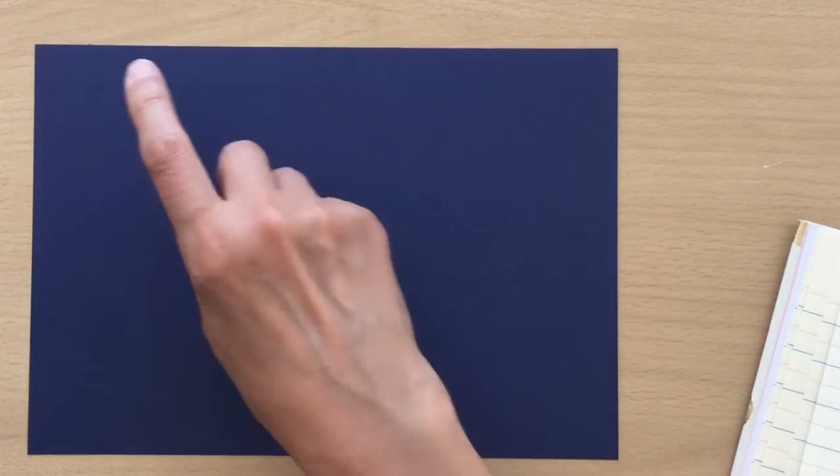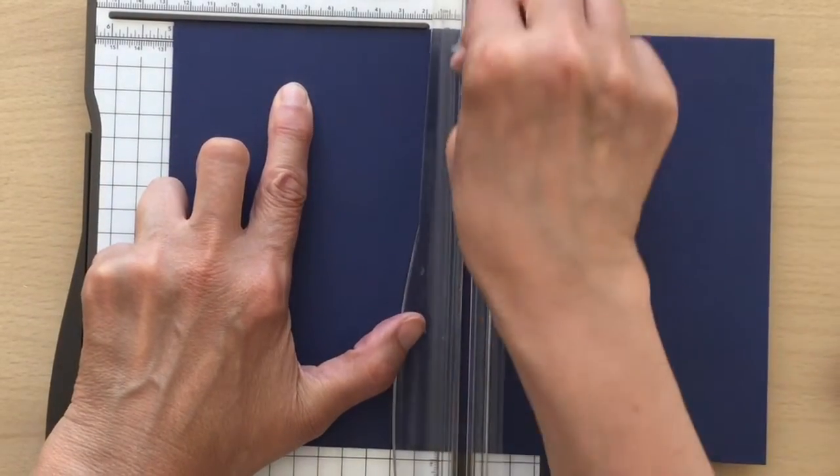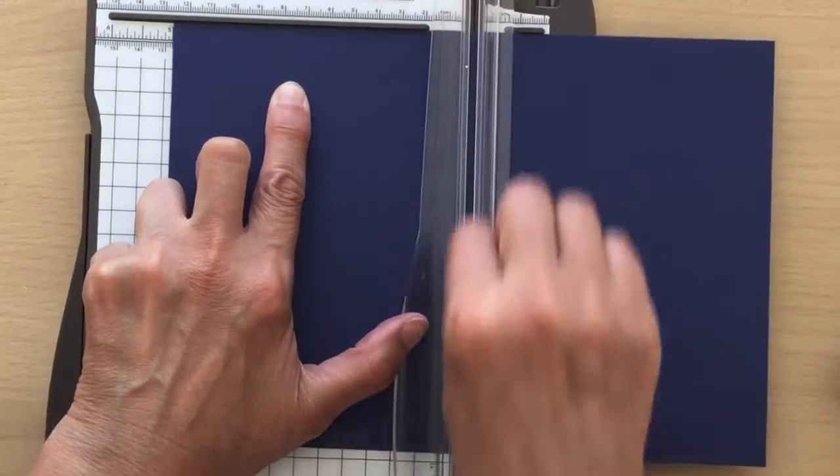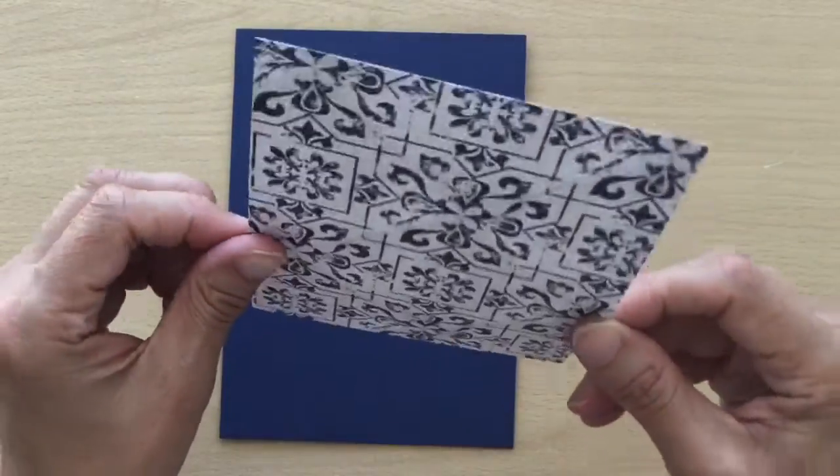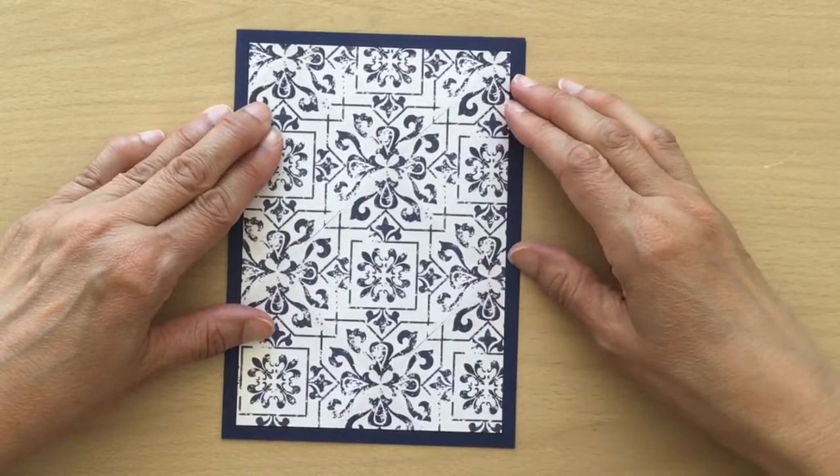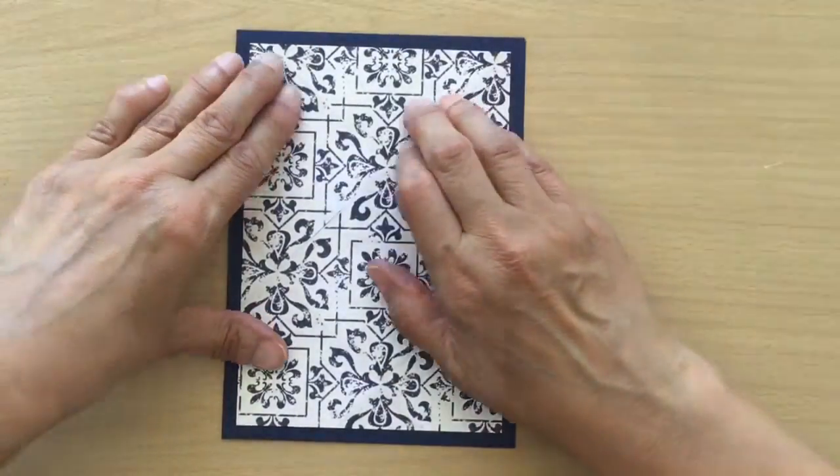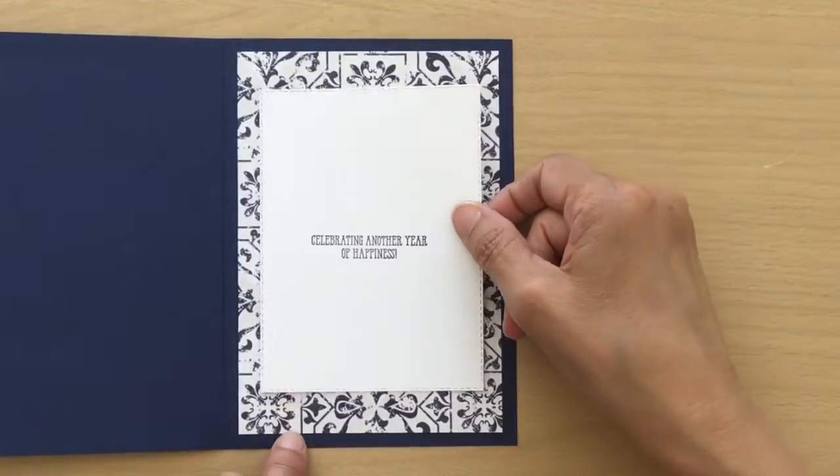My card base, as I said, is Night of Navy and it's going to be a five by seven card, so it's 10 inches by seven inches or 25 by 17.5 centimeters. I'm just going to score this down the center, so I'm actually working in inches today so I'm going to be scoring this at five inches. But if you were working in centimeters it'd be 24.5 centimeters. I'm just going to start by sticking this to the front of my card. I've made this so it's got quite a large border around it, and then this piece is going to go inside our card and then I'm going to stick this one on top.